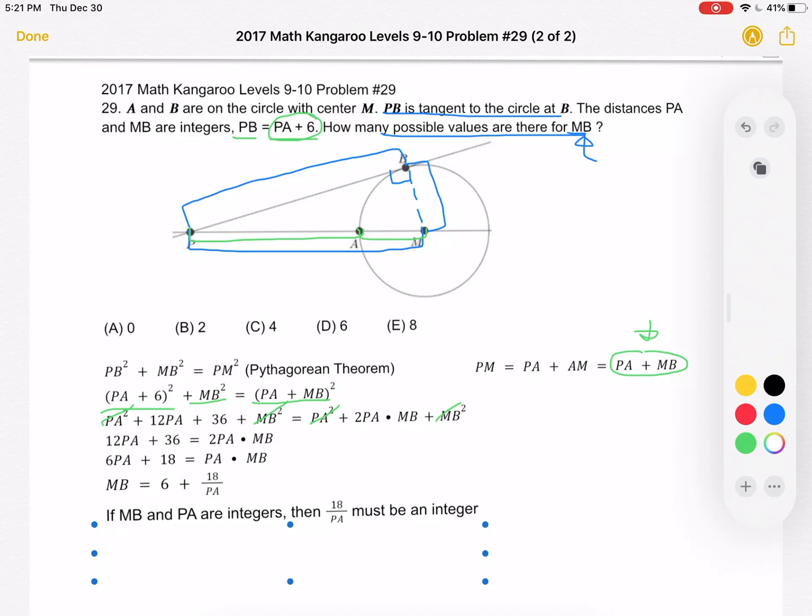Now we know from the problem that the distances PA and MB are integers. So if MB is equal to 6 which is an integer plus this number and we know that MB is an integer, then 18 over PA must also be an integer. So let's figure out what that leaves us for PA.